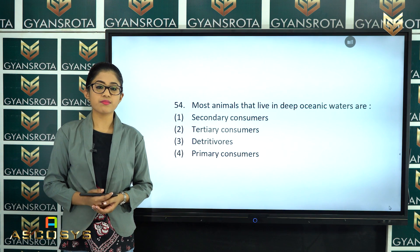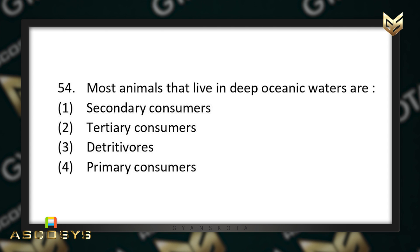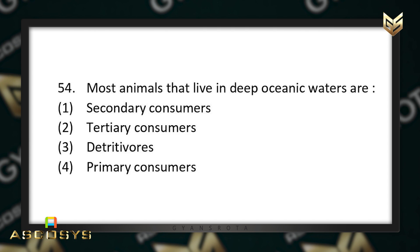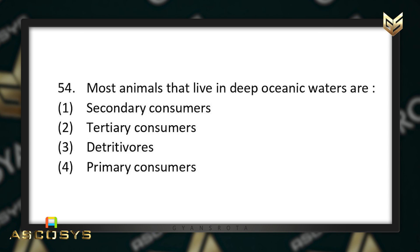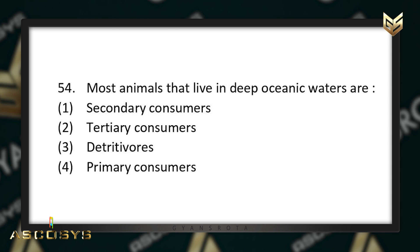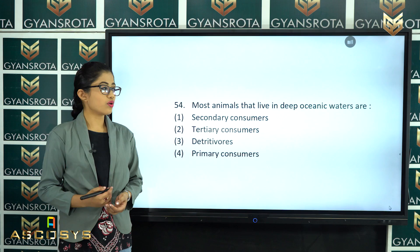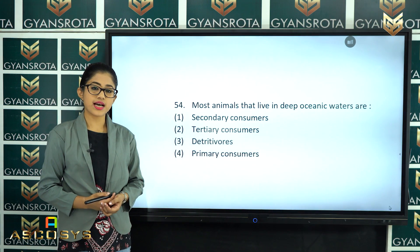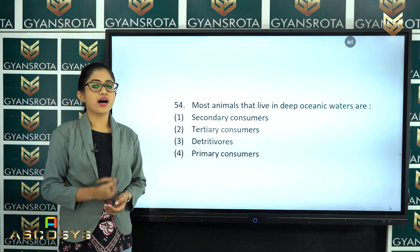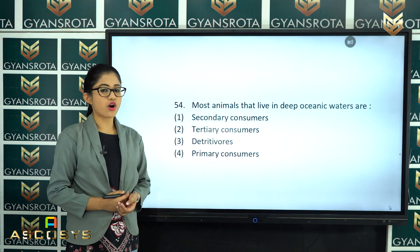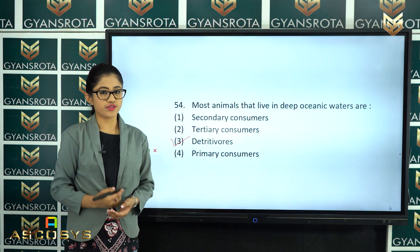The next question is question number 54. Most animals that live in deep oceanic waters are secondary consumers, tertiary consumers, detritivores, or primary consumers? From the chapter Ecosystem, the animals that live in deep oceanic waters are detritivores. Option number 3 is the correct answer.